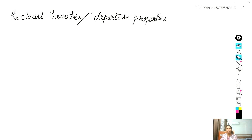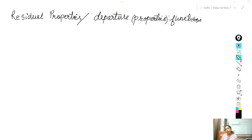So what are residual properties — or departure functions? Either one essentially means the difference between what it is in the non-ideal scenario and what it is in the ideal scenario, at the same temperature and pressure.